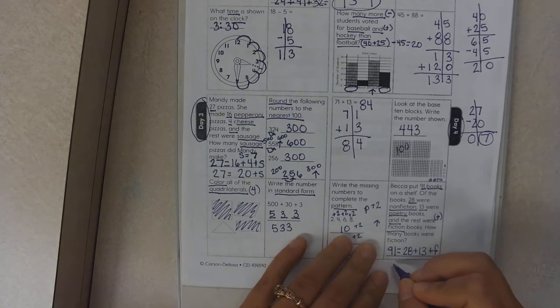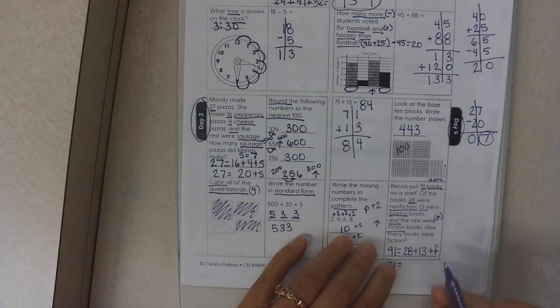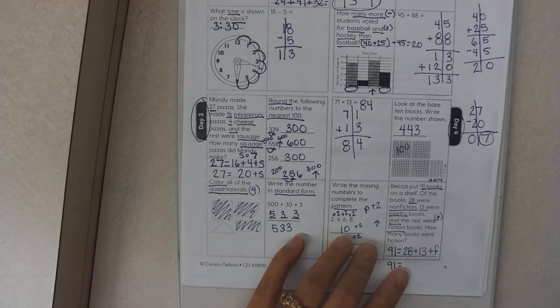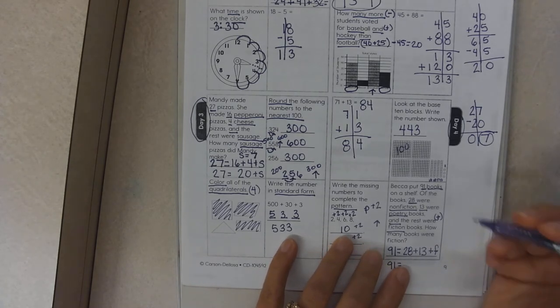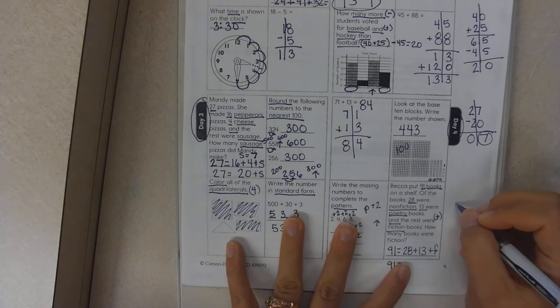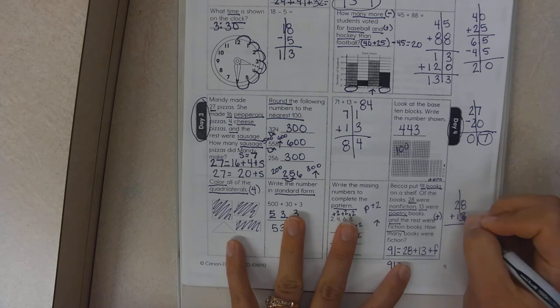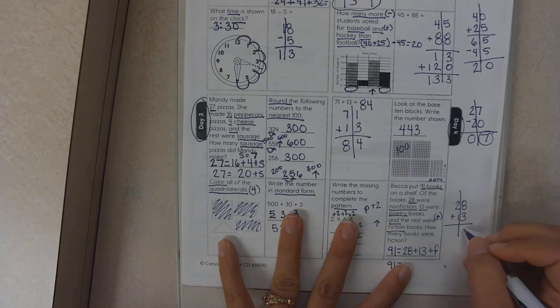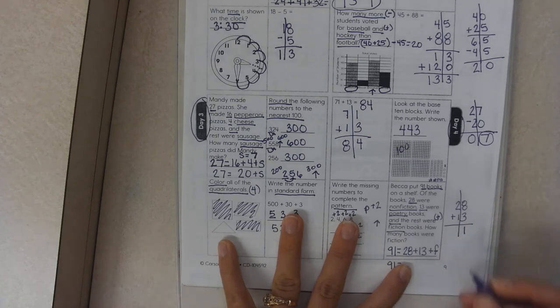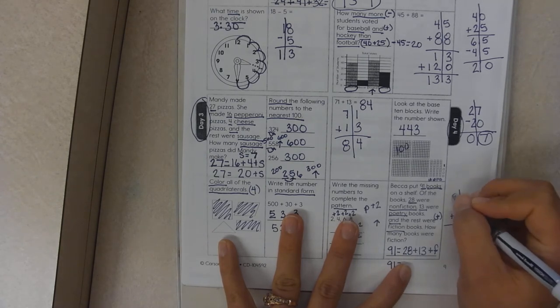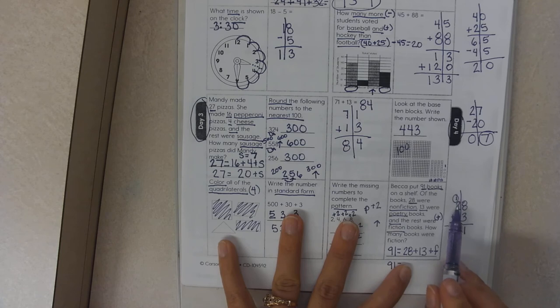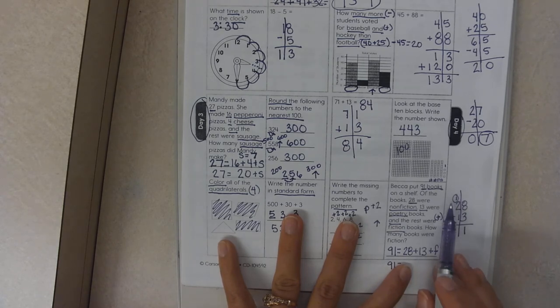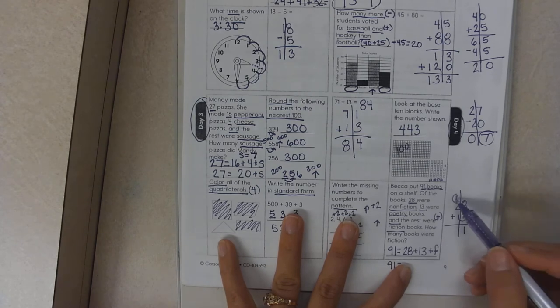28 plus 13. I can do that mentally. I do not want you to do it mentally. So I want you to write 28 plus 13 separate. Eight plus three is 11, and I'm going to carry that one. That one is actually one ten, so I'm actually going to carry that 10 to the tens place. Ten, twenty, thirty, forty.